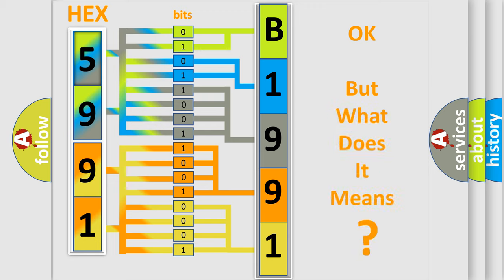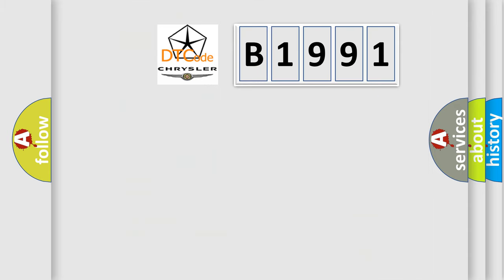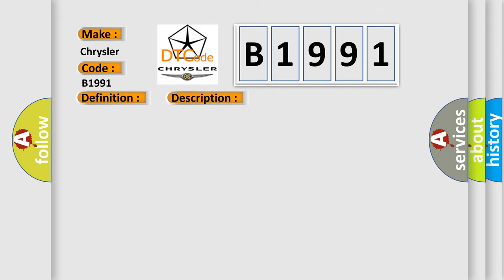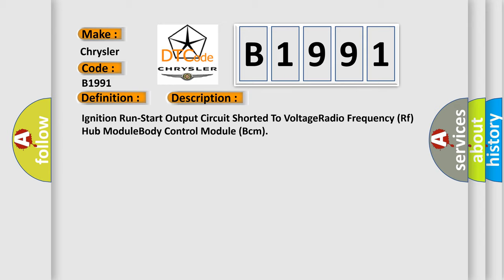We now know in what way the diagnostic tool translates the received information into a more comprehensible format. The number itself does not make sense to us if we cannot assign information about what it actually expresses. So what does the diagnostic trouble code B1991 interpret specifically for Chrysler car manufacturers? The basic definition is: Implausible ignition switch status message received, signal stuck high. And now a short description of this DTC code: Ignition run start output circuit shorted to voltage, radio frequency RF hub module, body control module BCM.